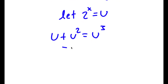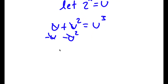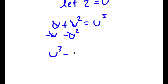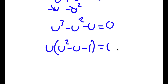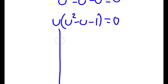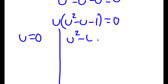If I subtract u squared and u on both sides, I get u to the power of 3 minus u squared minus u is equal to 0. Now I'm going to factor out u. So I get u times u squared minus u minus 1 is equal to 0. And this gives me two equations: u is equal to 0, and u squared minus u minus 1 is equal to 0.